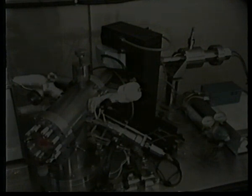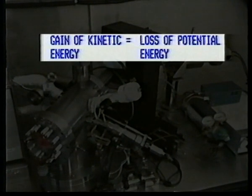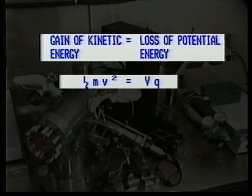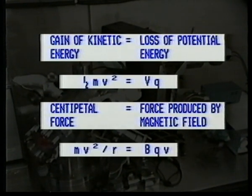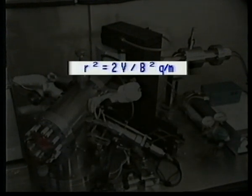As the ions accelerate, the gain in kinetic energy is equal to the loss of potential energy. Hence, kinetic energy gain equals potential energy loss. Similarly, the curved path of the ion beam is due to the centripetal force caused by the magnetic field. Therefore, centripetal force equals the force produced by the magnetic field. Eliminating the velocity between these two equations gives this expression for the square of the radius.